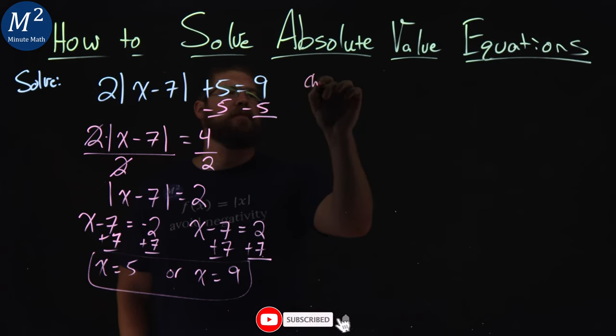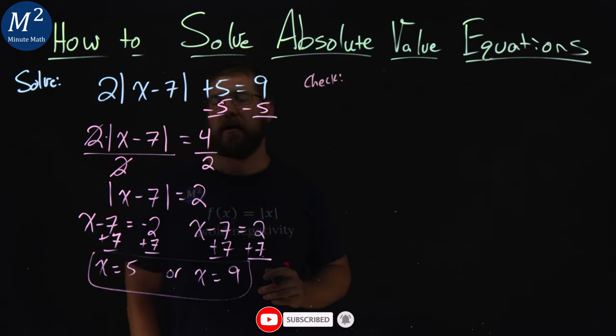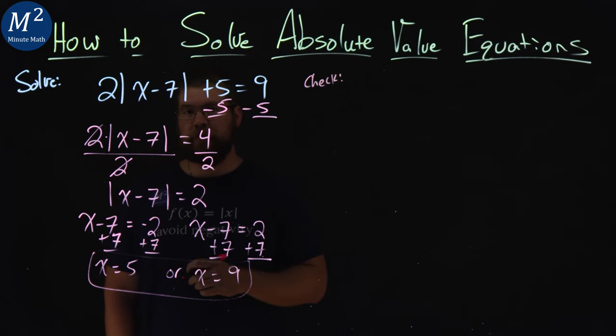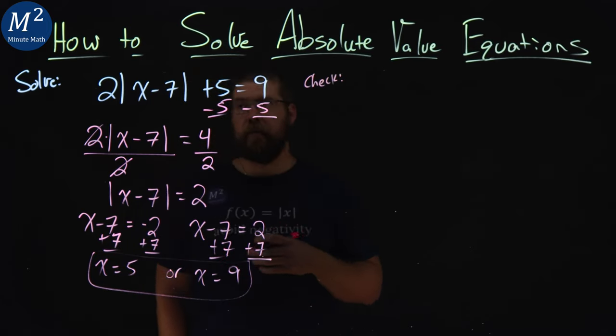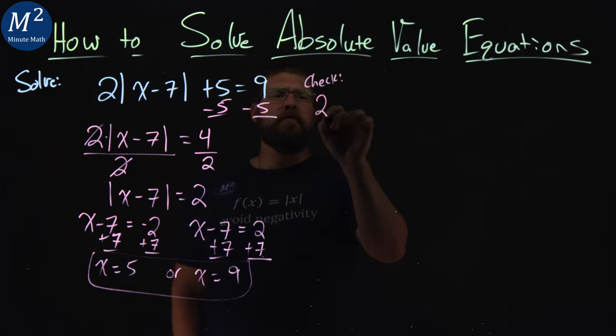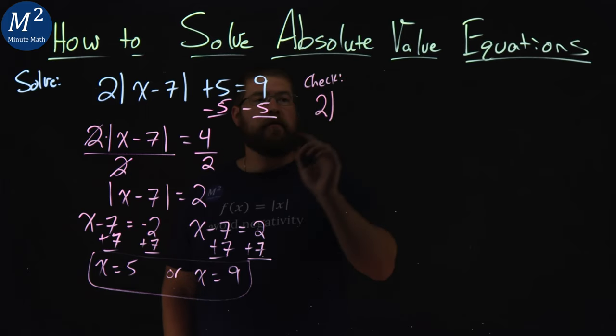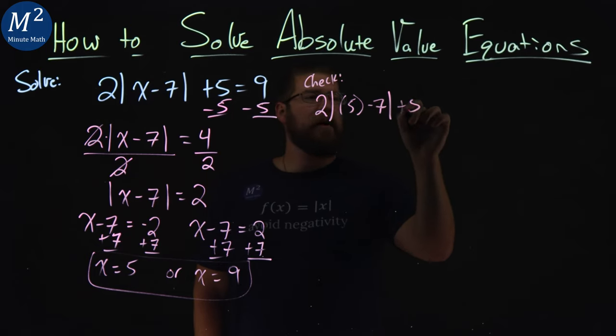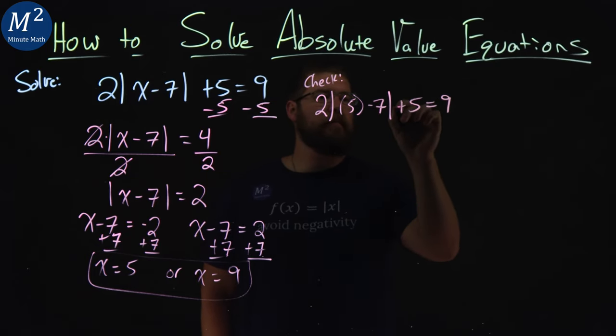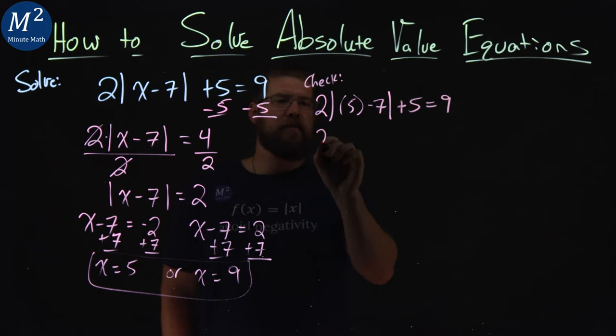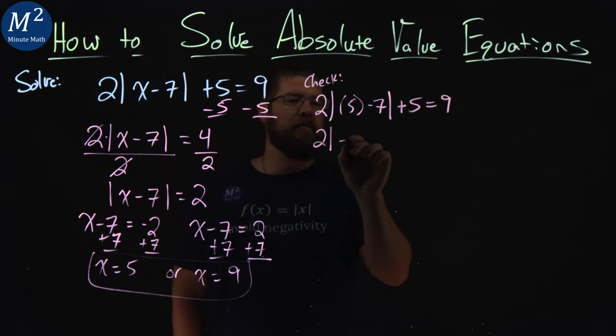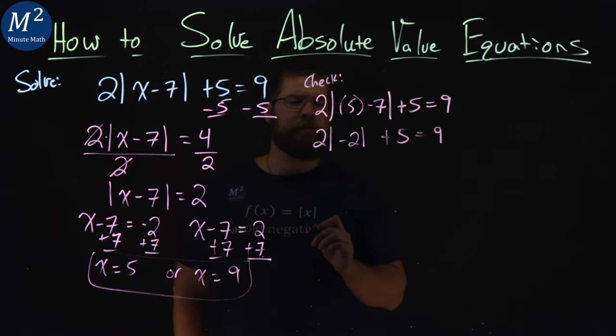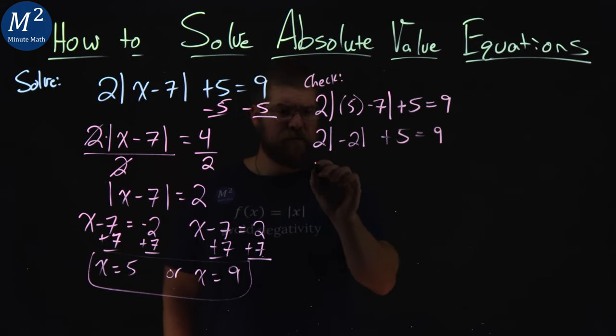Now we want to check this just to be sure. So to check it, we take our original equation, and we plug in our values and simplify, and see if the left and right hand side are equal. So we have 2 times the absolute value, so the first one is 5. So 5 minus 7, plus 5 is equal to 9. We'll simplify this to absolute value, 5 minus 7 is negative 2, plus 5 is equal to 9.